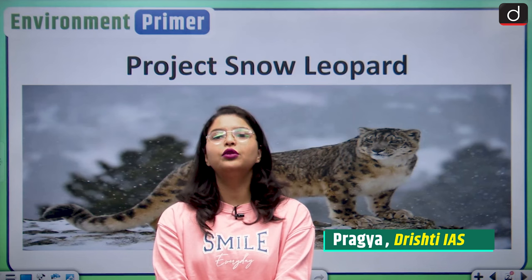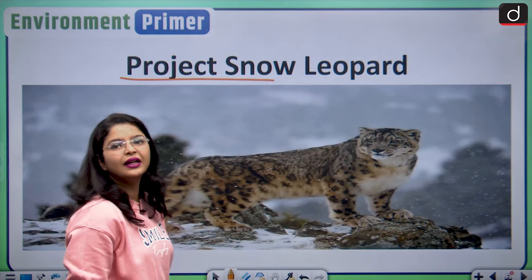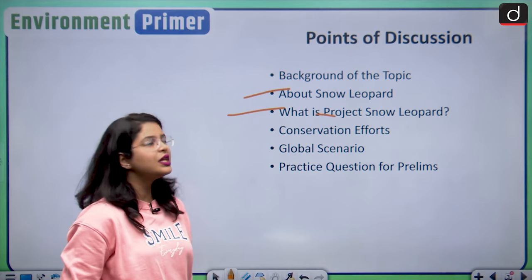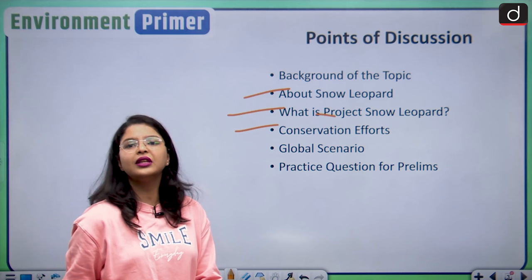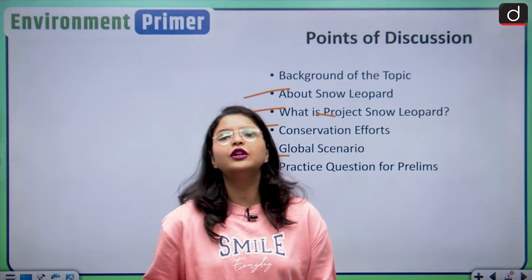Hello and welcome everyone to the Environment Primer series of Drishti IAS. My name is Pragya. In today's episode, we are going to discuss an important animal project. The title of today's discussion is Project Snow Leopard. We will first study about the snow leopard, then analyze Project Snow Leopard, then see the conservation efforts of the Government of India, understand the global scenario, and lastly look at some questions for your preliminary examination.